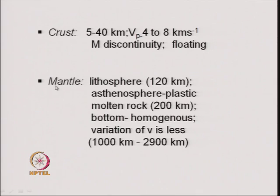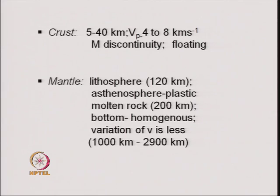The crust floats on the mantle by taking a portion of the mantle along with it. The mantle consists of three distinct portions. The top portion is called the lithosphere, which is about 120 kilometers deep and is integrally connected to the crust, so that the crust along with the lithosphere moves over the rest of the mantle. Immediately below the lithosphere is the asthenosphere — a plastic molten rock having a thickness of about 200 kilometers. The rest of the mantle is fairly homogeneous, with less variation of seismic wave velocity within this zone. The thickness of the mantle is about 1000 to 2900 kilometers.